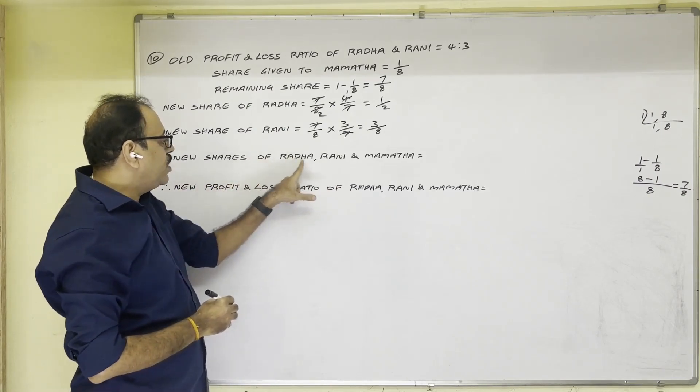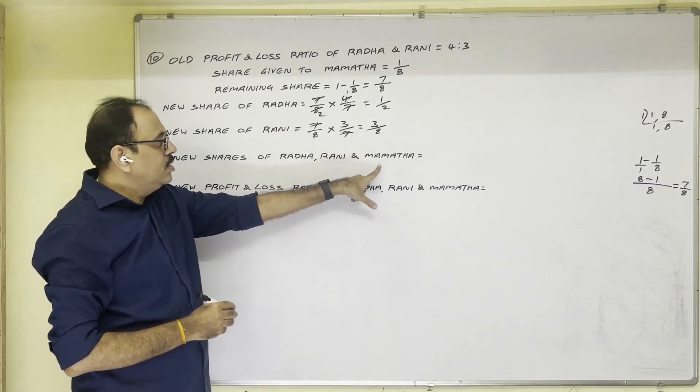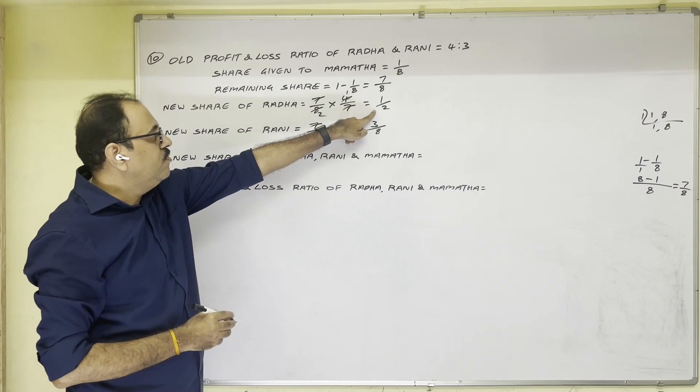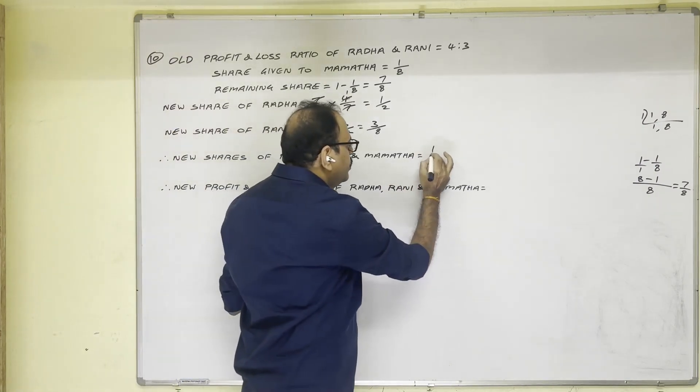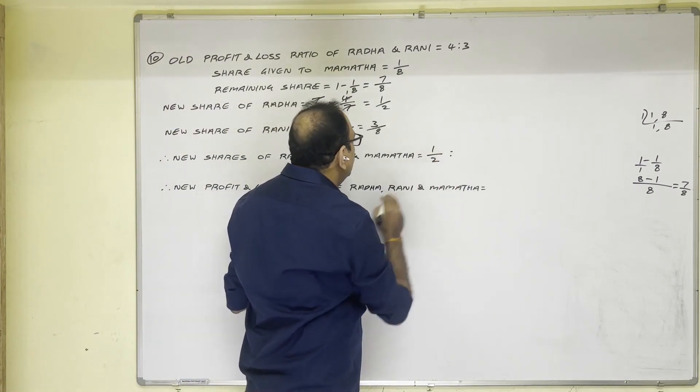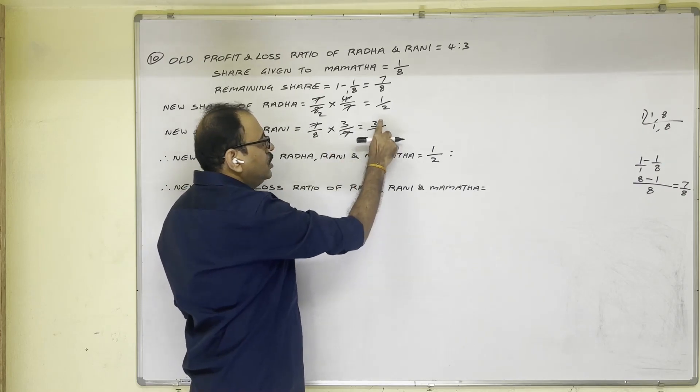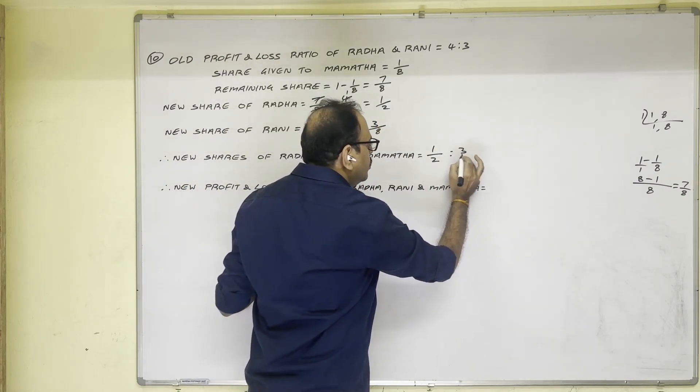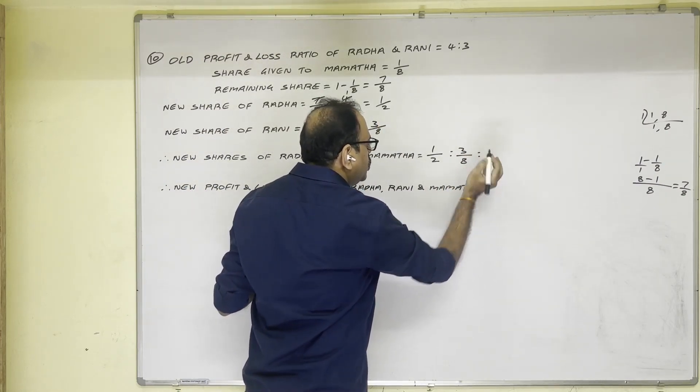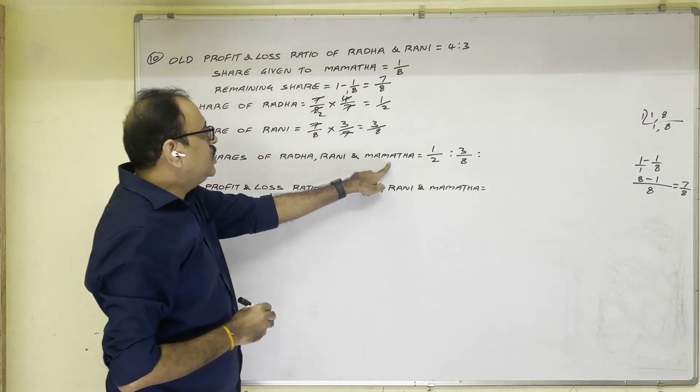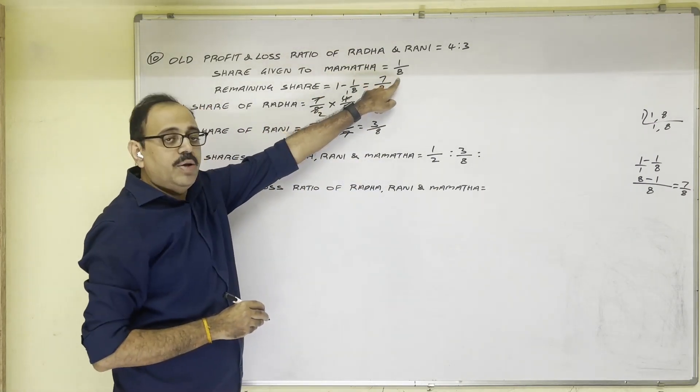So these three shares we write in one place. New shares of Radha, Rani, and Mamata. Radha's new share is one by two. Rani's is three by eight. Mamata's share given in the question only, one by eight.